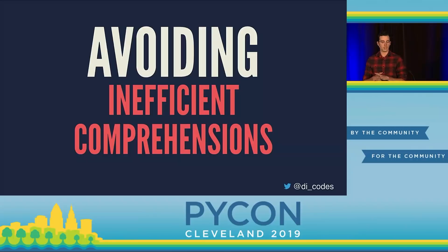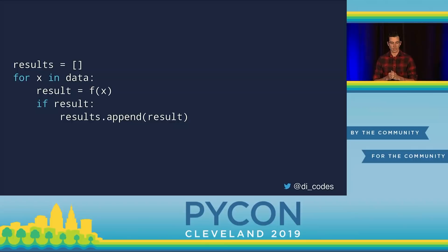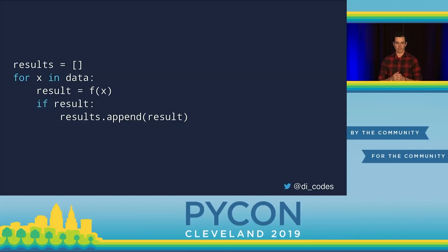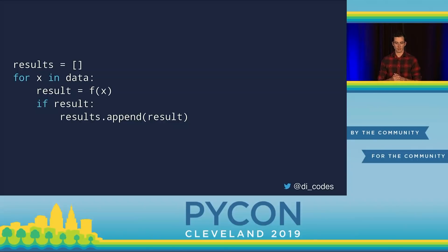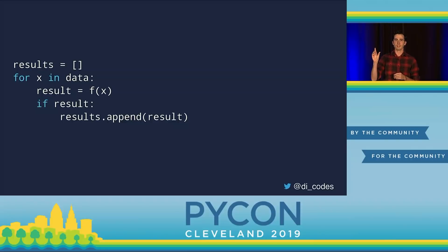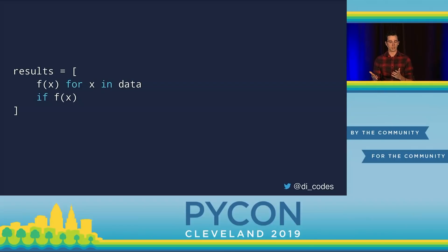Another thing you can do is avoid inefficient comprehensions. Here's an example: we initialize an empty list called 'results', iterate over 'data', call a function to get a result, and if that result is truthy, we append it. That empty-list initialization outside the for loop is kind of a code smell — you could turn it into a list comprehension, which would look nicer and be fewer lines. However, if f(x) is expensive, the comprehension calls it twice instead of once, making it more inefficient. With the walrus operator, in the filter clause of the comprehension, you can assign y to the value of f(x) and then reuse it.